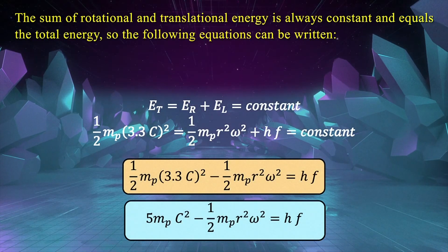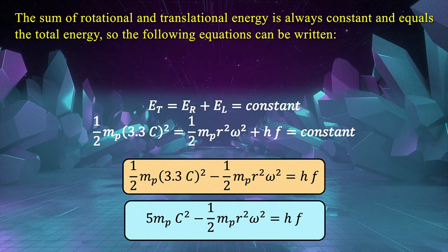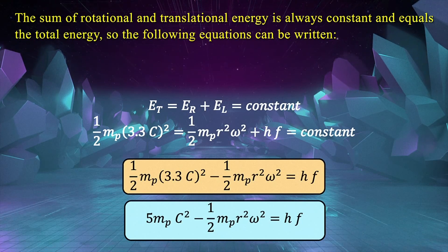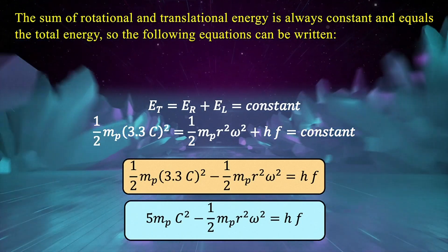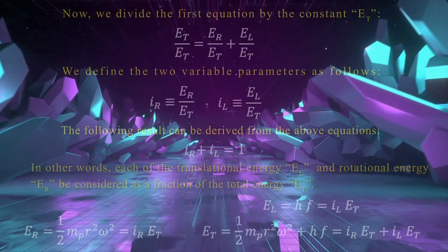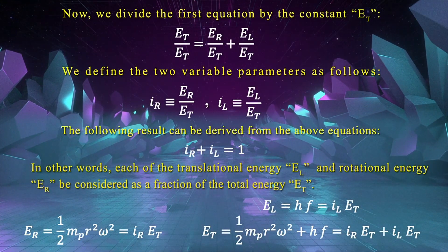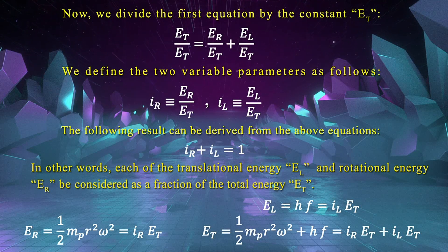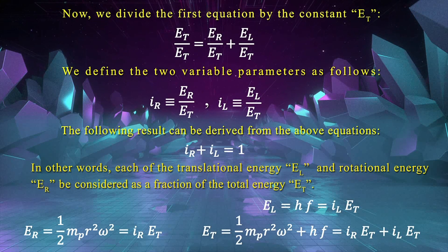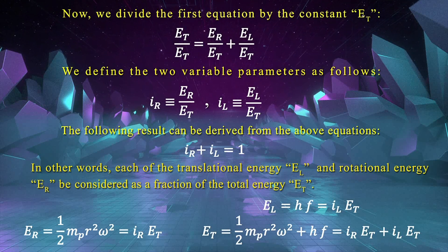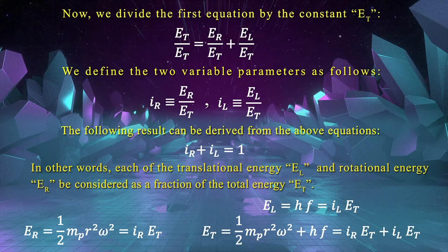The sum of rotational and translational energy is always constant and equals the total energy, so the following equations can be written. We divide the first equation by the constant E and define the two variable parameters accordingly. Each of the translational energy E_L and rotational energy E_R can be considered as a fraction of the total energy E.